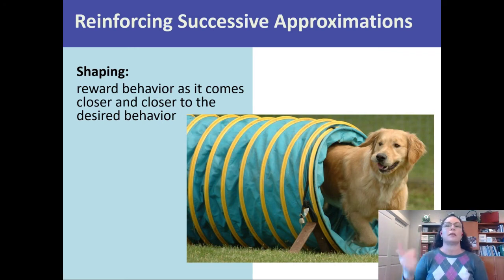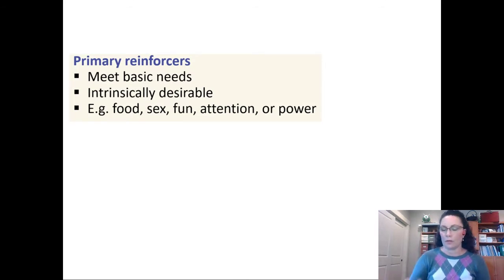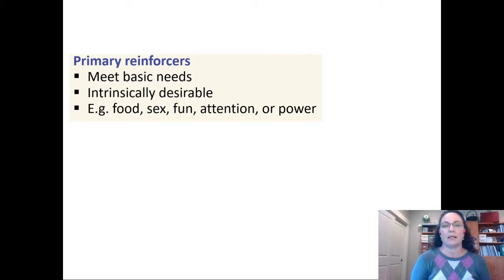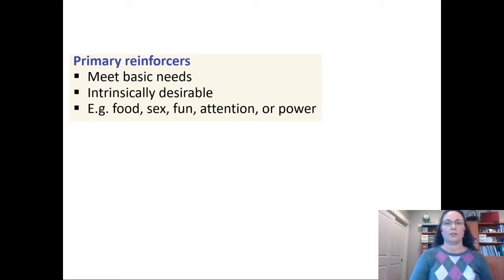Once the behavior is learned, with an animal like Shamu or a performing dog, you'd want to reward after every single time they display the desirable behavior so they don't backslide. Primary reinforcers are reinforcers that meet basic needs — things that are intrinsically desirable. Just like unconditioned stimuli in classical conditioning, these are things you don't have to learn to want: food, sex, fun, power, attention. Those are good examples of primary reinforcers — you just inherently want them.